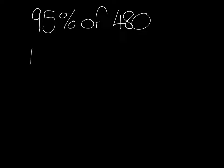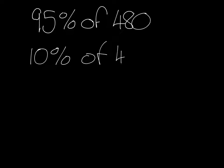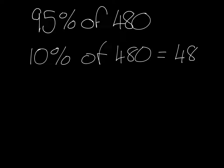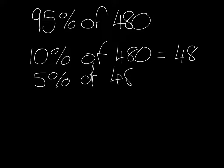So the first thing I need to do is find 10% of 480. 10% is one tenth, so I divide by 10 to get 48. So 10% of 480 is 48. So 5% of 480 is just half of that, and I get 24.